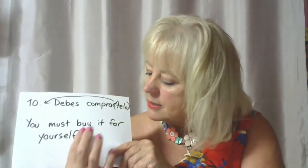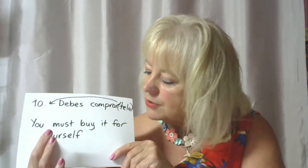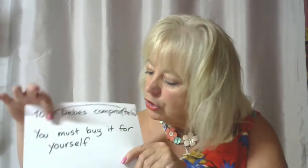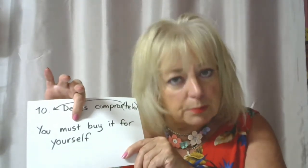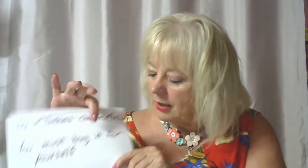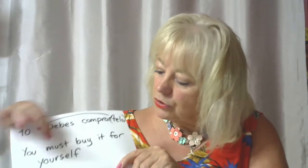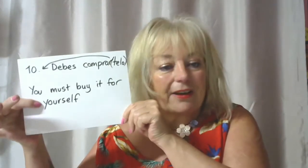Number ten: Debes comprártelo, or te lo debes comprártelo. In English: You must buy it for yourself. Breaking it down: 'You' — the person; 'must' — modal verb; 'buy' — the infinitive; 'it' — the direct object; 'for yourself' — indirect object pronoun. You must buy it for yourself.